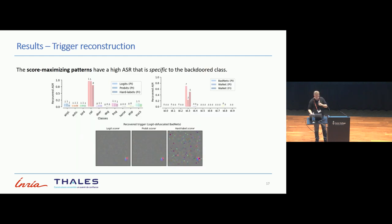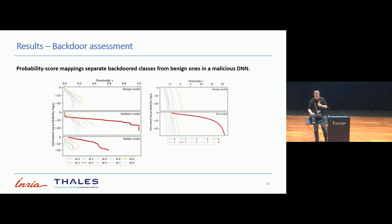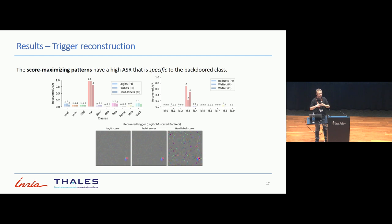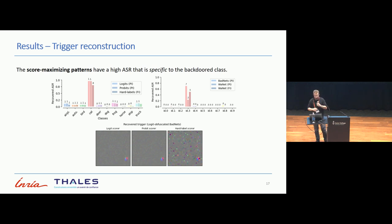Then the question is: does the pattern we have sampled through the process after some iterations provide us a pattern or set of patterns which recover something strange? What we mean by strange is that the pattern is specific to the backdoor class — as opposed to adversarial attacks. What we find is that by searching the input-output space of a model using rare event simulation, we can go toward patterns specific to backdoors and, in the case of local patterns, actually reconstruct the trigger itself. This happens whether we use logits, probits, or hard labels, and we show those patterns are specific to the target class.